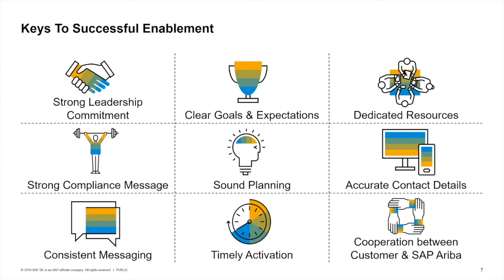Next is timely activation. Once your suppliers have taken the necessary actions to establish a relationship with your organization on the Ariba network, you will need to activate them in your system in a timely manner so that all documents are transmitted electronically. Finally, if you are leveraging SAP Ariba's supplier enablement services, ensure that there is cooperation between your organization's supplier enablement team and SAP Ariba's supplier enablement team, as cooperation and coordination are important to drive completion of key activities.